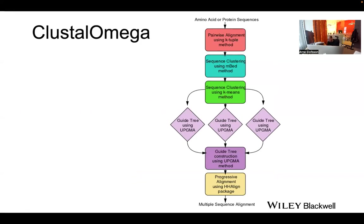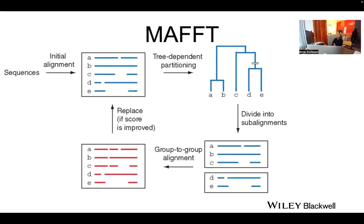ClustalW is a bit slow and doesn't handle large datasets well, so people now use Clustal Omega. It uses k-tuple word matching similar to BLAST hits, then clustering using k-means, dividing into sub-strategies, constructing a guide tree, and doing progressive alignment using HH-align, which is faster. Clustal Omega can handle maybe 100,000 sequences quite accurately.